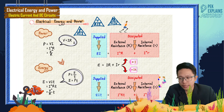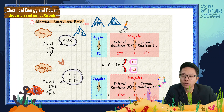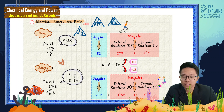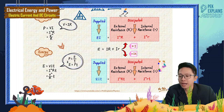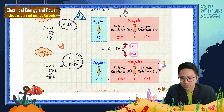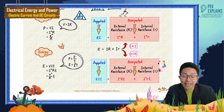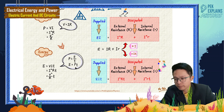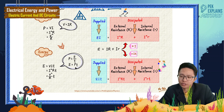We substitute V equal to IR and that's why we get I squared R. We also have V squared over R. These three are the formulas for power. Now if you want to calculate the energy loss or energy supplied, we know that power is energy over time — power is actually the rate of work done, or rate of energy, meaning energy used for every second.